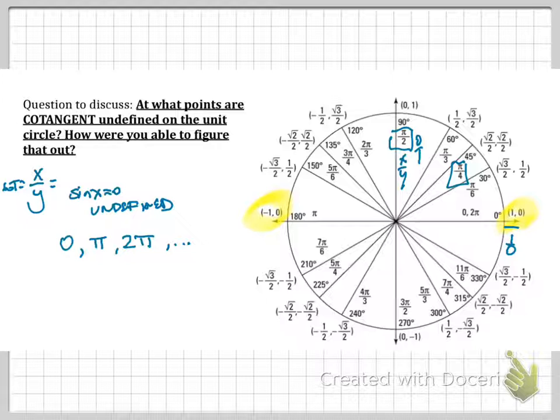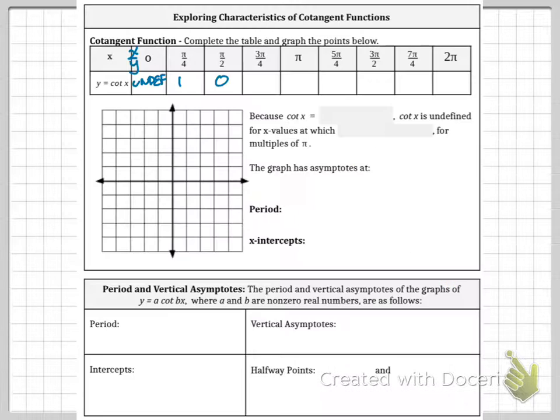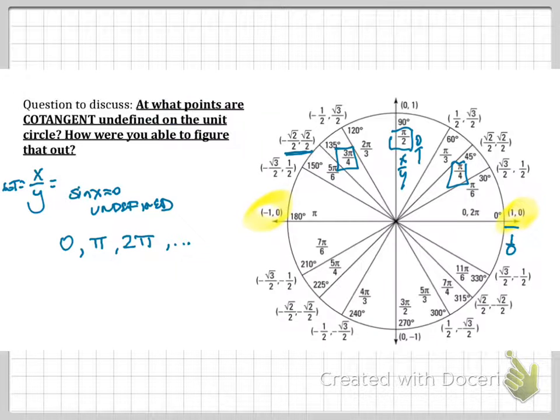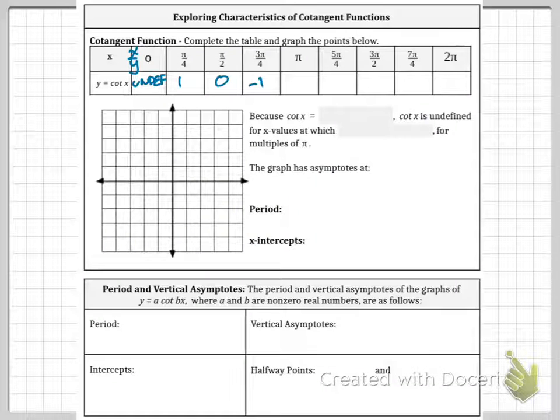At 3π/4 here, we're looking at these values, x over y, the same exact values. So that means, and we have a negative, so that means it's negative 1. At π, we have x over y, we have negative 1 over 0. So at this point, we're undefined.